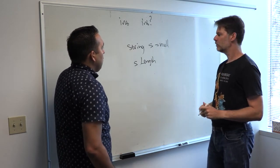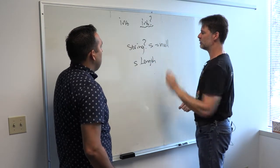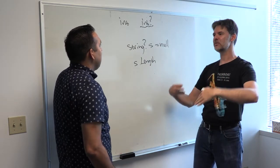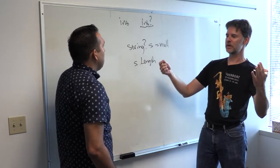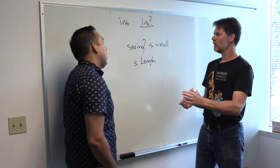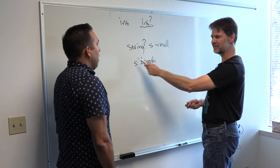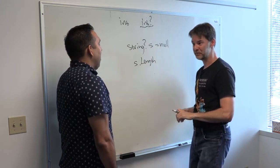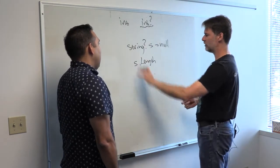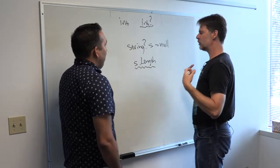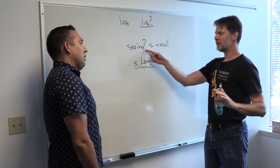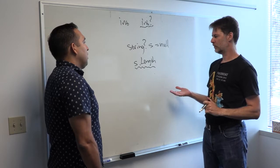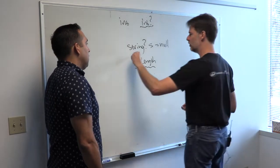We're going to let you use this nullable syntax on reference types as well. You can say string question mark, meaning a string that is intended to sometimes be null — it's part of your model. A method that returns string question mark says: beware, I will sometimes return null. On the other end, when you have one of these nullable references, the compiler will be vigilant and prevent you from indiscriminately dereferencing it. It's essentially adding a bunch of warnings — adding the syntax and then adding warnings that you are dereferencing something that might be null.